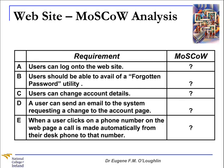Let's take a look at our website analysis. When building a new website, fixing an old one, or updating a site, we will have a long list of requirements. I have selected just five here for our example — typical requirements for a website where the overall aim is that a user can log on and change their user profile. Requirement A is that users can log on to the website. B, that users should be able to have a forgot password utility. C, that they can change their account details. D, that the user should be able to send an email to the system requesting a change to an accounts page. And finally, requirement E is that when a user clicks on a phone number on the webpage, a call is made automatically from their desk phone to that number.